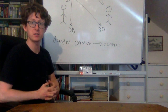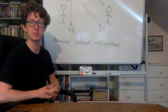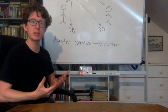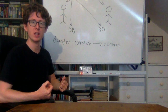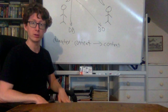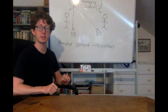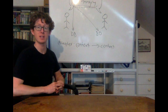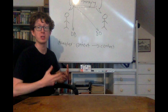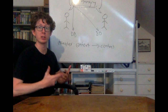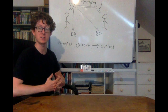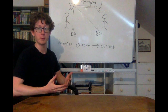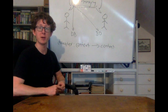Everybody assesses particular uses of context-sensitive sentences in the same way — they look at the context of utterance, determine what content the sentence expresses in that context, and evaluate that proposition. This might seem like a trivial point, but it's actually very important. This feature — that everybody should assess particular uses of context-sensitive expressions in the same way — is going to lead to the disagreement problem about contextualism, which we'll talk about in a few weeks.